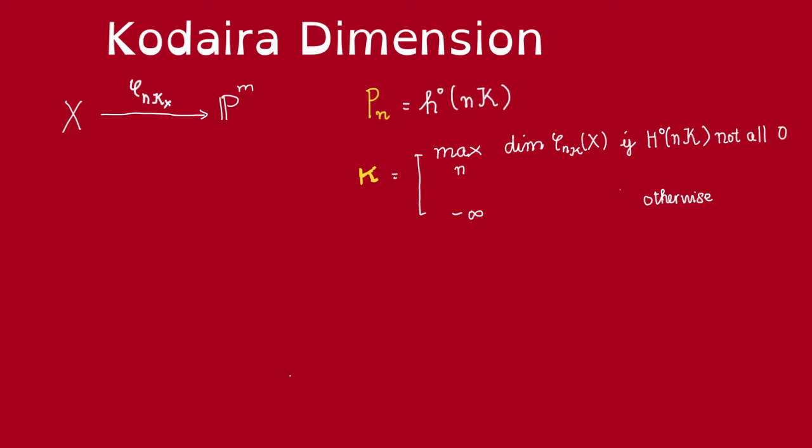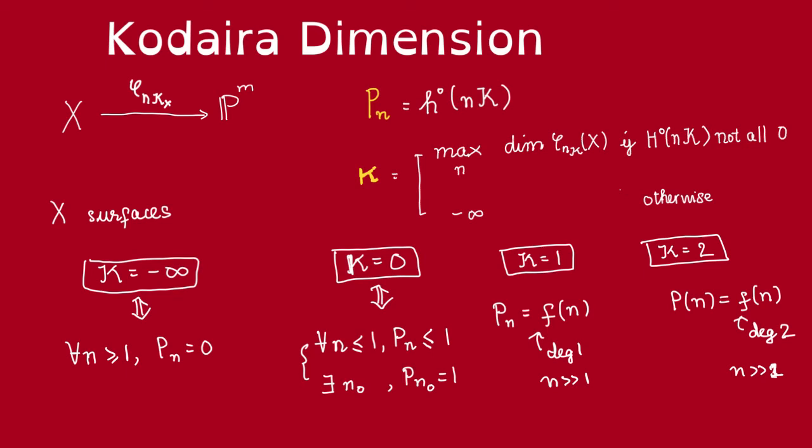Now, lastly, we want to talk about the relationship between the Kodaira dimension and the plurigenera, which we also call the n-genus that we defined before. Of course, we should expect some relation, because these n-genus are just defined to be the dimension of the global sections of the invertible sheaf corresponding to these classes.